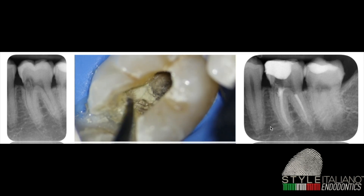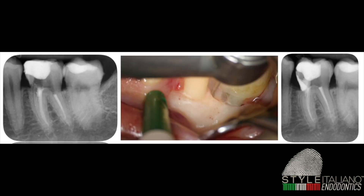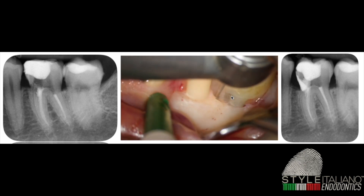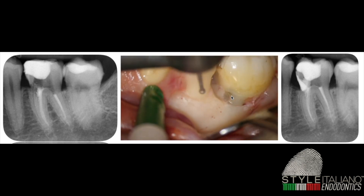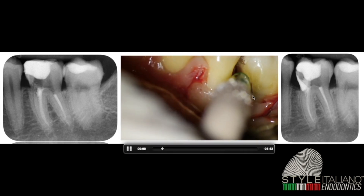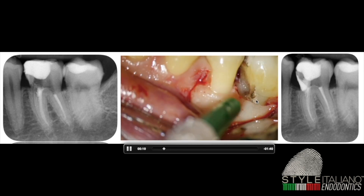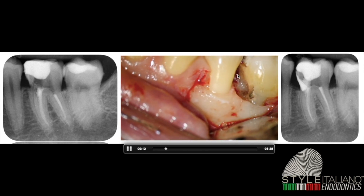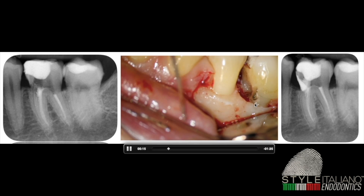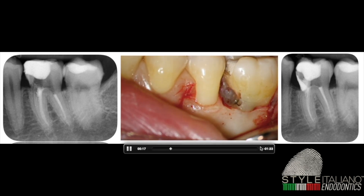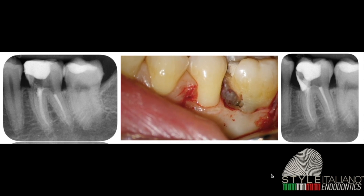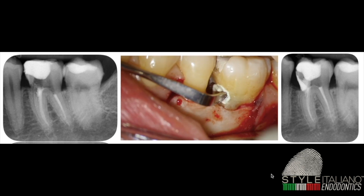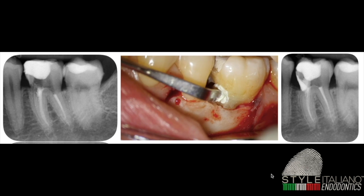After one week, I decided to reopen a flap and re-intervene on this tooth. I opened a flap and removed some bone in the coronal part. As you can see here, the bone is growing inside the tooth, and it's impossible to identify the margin of the tooth — impossible to find the line that separates the tooth from the bone because we lost the periodontal ligament.